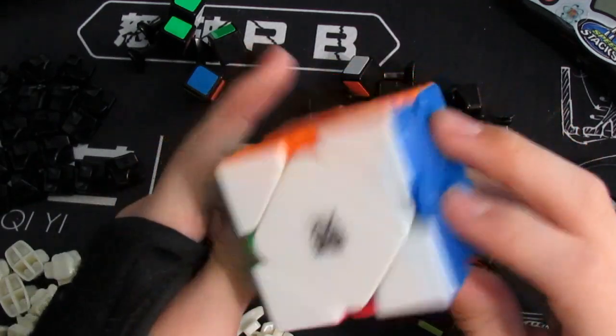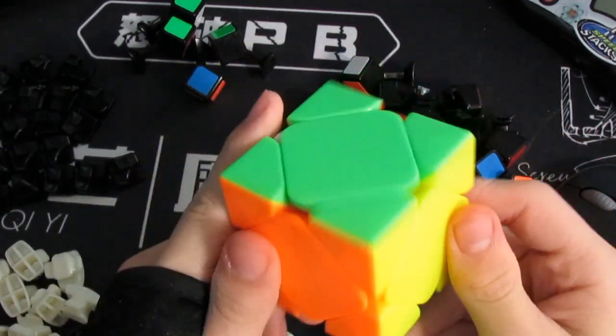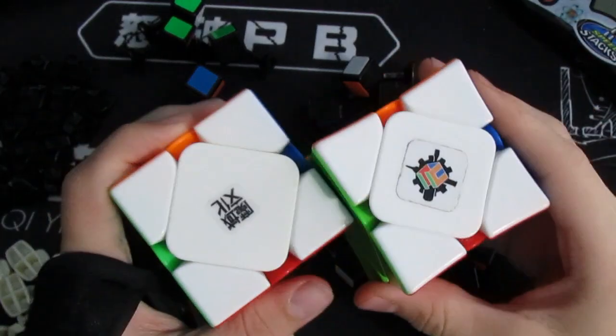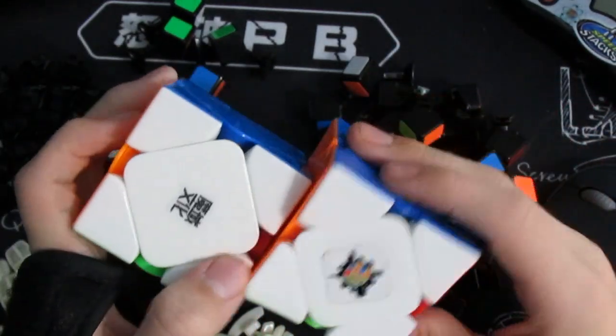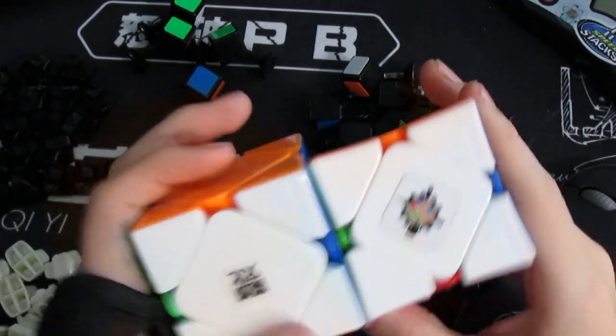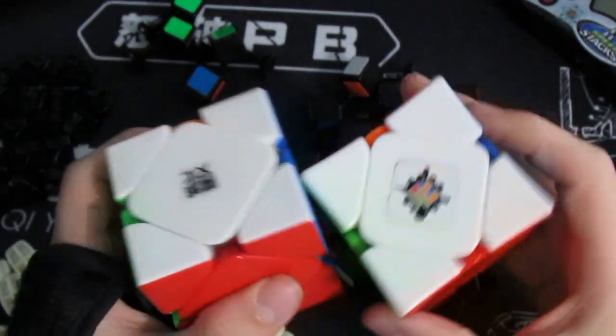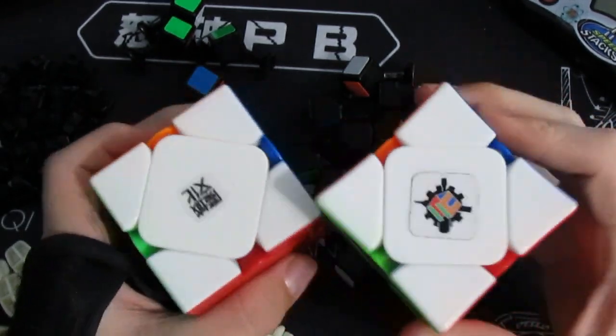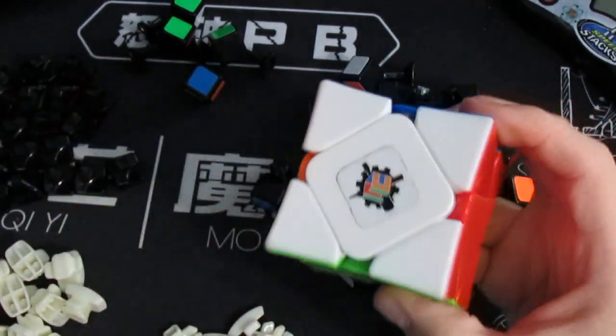Now I know a lot more speed cubers use the Aoyan than the Wingy. I'm not exactly sure why that is. You can see that in pro skewbers as well but most pro skewbers use the Aoyan, not the Aoyan, the Moyu or the Cyclone Boys and I still use the Wingy.